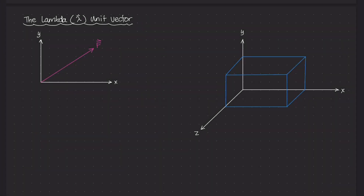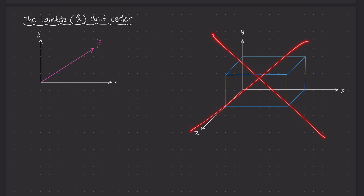Welcome back. In this video, I want to talk about unit vectors in 3D space. When we're studying force vectors in a three-dimensional coordinate system, there are certain unit vectors associated with each component in the x, y, and z directions, and the direction of the force vector itself. But to start, I want to review how we've been looking at unit vectors in two-dimensional space, so we'll focus on this diagram here for a minute.